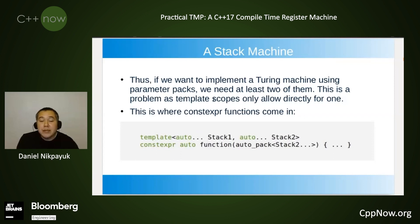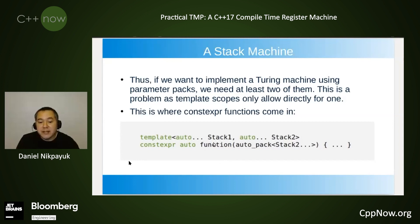If we want to implement a Turing machine using parameter packs, we need at least two of them. This is a problem as template scopes only allow directly for one. This is where constexpr functions come in. We have a function with a template component, and then we create a second stack within the type of the argument of the function, which also gets represented in the template stack — allowing for two.